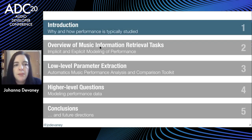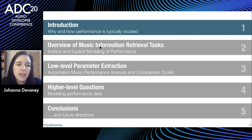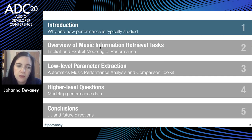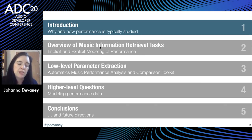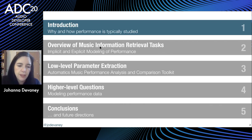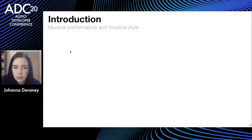The structure of the talk: I'll begin with a brief introduction of why and how performance is typically studied, then give an overview of MIR tasks specifically related to implicitly and explicitly modeling musical performance. I'll then talk about low-level parameter extraction and tools I've developed for doing this, then some high-level questions you can ask once you've extracted performance data. I'll end with conclusions including suggested future directions for people working with music technology software.